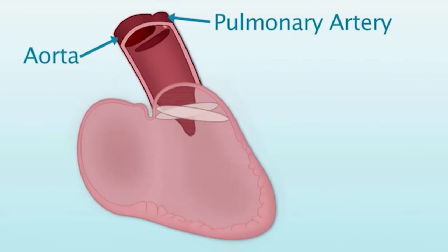The conal tissue involved in the septation of the truncus arteriosus also directs placement of the aorta and pulmonary artery over their related ventricles.